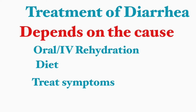Diet is also important. Banana, white rice, and toast can actually help with diarrhea, and it is recommended to start on a low-fiber diet and gradually increase fiber intake. You can also treat associated symptoms: panadol for fever, painkillers for abdominal pain, and your doctor may prescribe Gravol if you're having vomiting.